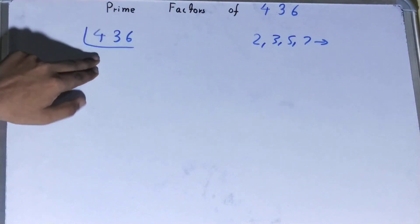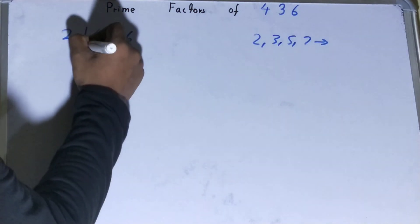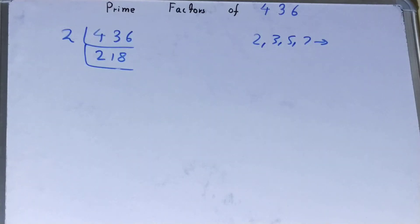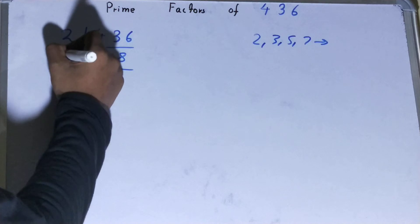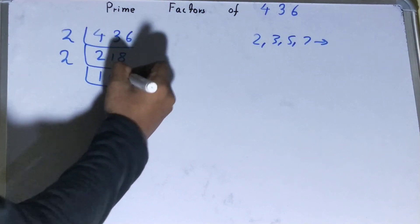We have that is 2. Is the number 436 divisible by 2? The answer is yes, because it is an even number. So divide it and you'll be left with 218. Is this 218 divisible by 2? Yes, it is an even number, so divide it and you will be left with 109.